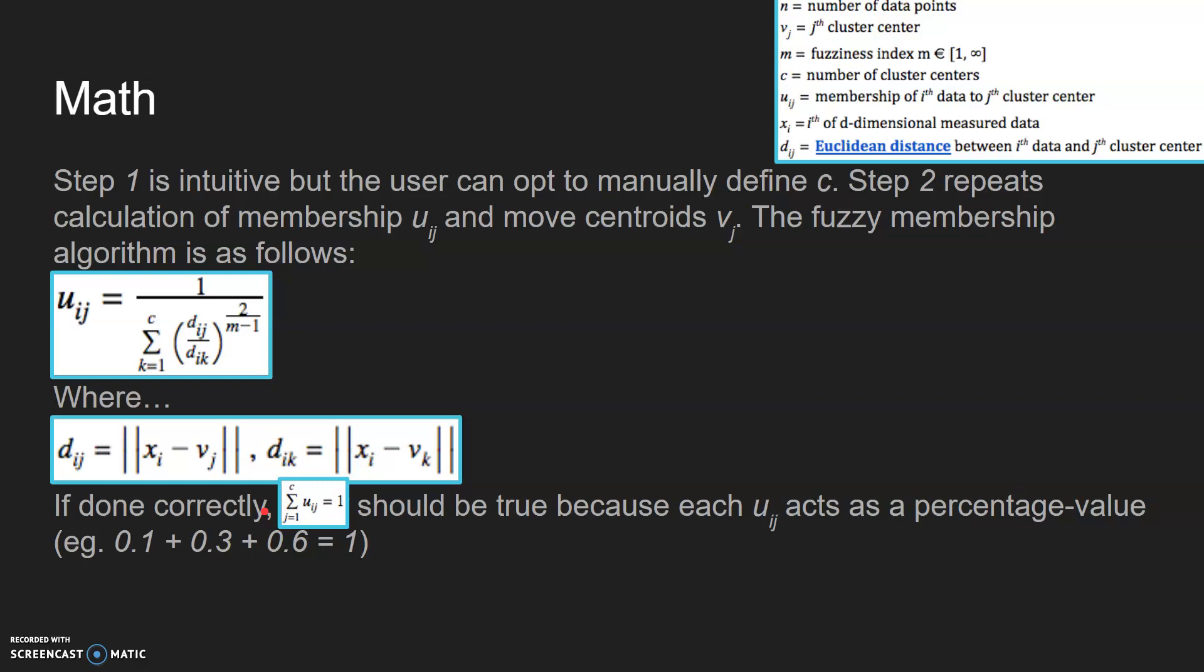UIJ should equal 1 because each UIJ value for each node is basically just a percentage value. So like this node is 60% this cluster and 30% another cluster and 10% the third cluster, and they should just add up to one.